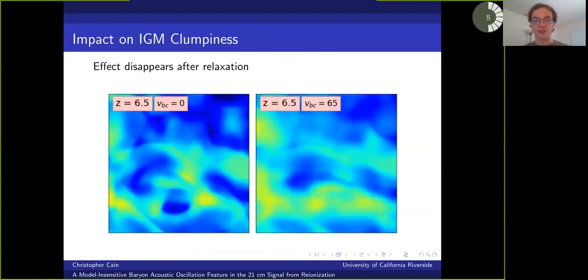Now we look at the same patch but about a hundred million years later after the gas has had time to dynamically relax. And not only is there significantly less structure thanks to the relaxation process, but the differences due to the stream velocity have largely vanished. And this suggests that the effect on the recombination rate is likely to be erased by the relaxation process and thus should be relatively unimportant in patches that had been ionized for a long time.